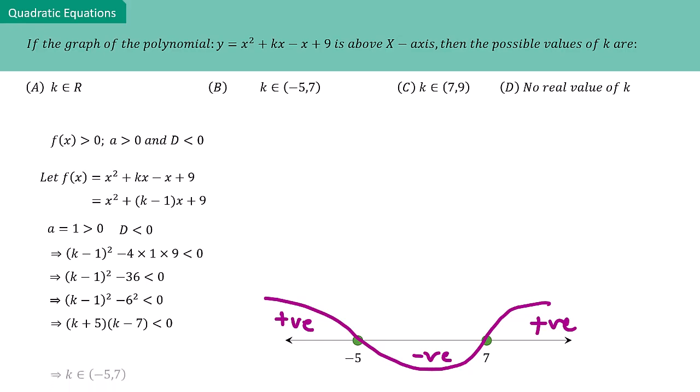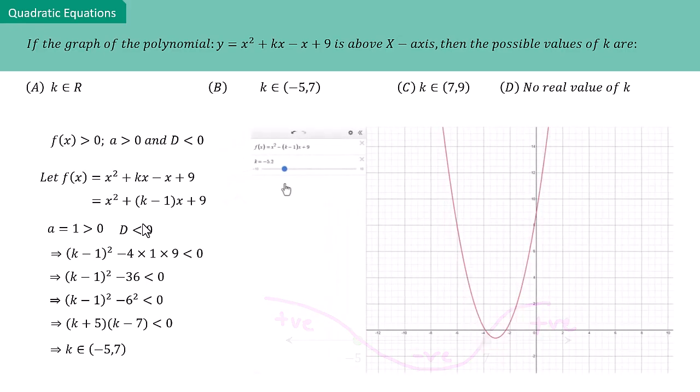After solving the inequality, we find that k lies in the open interval (-5, 7). This means that when k is within this interval, the graph will remain above the x-axis. Otherwise, it will either intersect the x-axis or lie below it.